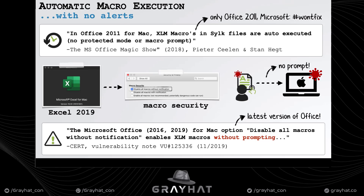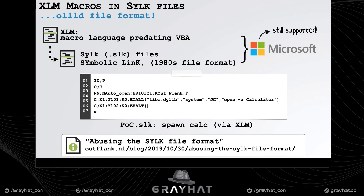The exploit chain starts with a bug found by two other security researchers. They discovered that even if macros are turned off, they could create a document with macros that would be automatically executed with no alerts or prompts. They found they could use a very old file format called SYLK files and write macros not in VBA but in XLM — not XML, but XLM.